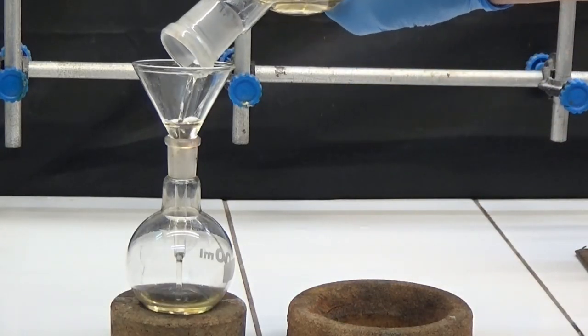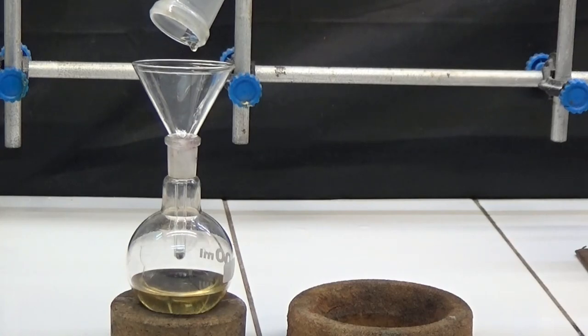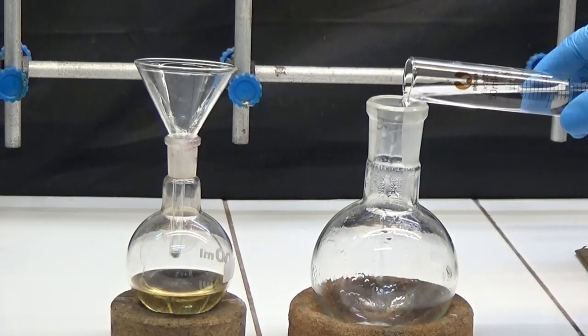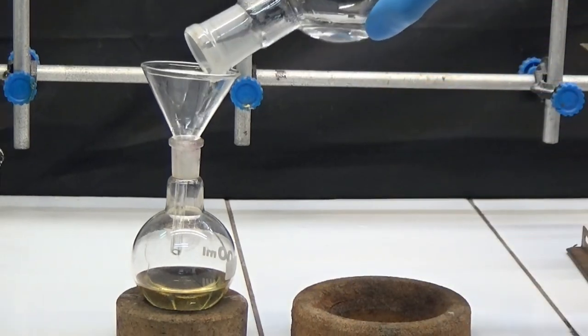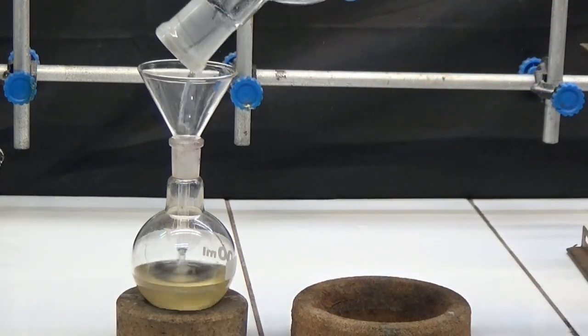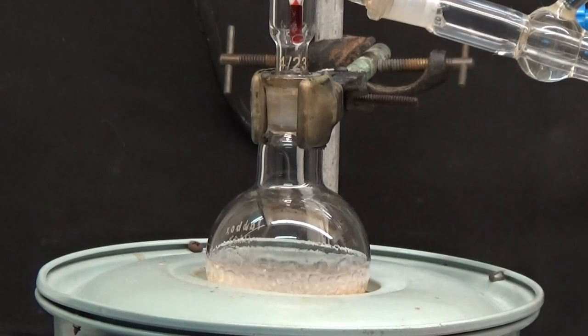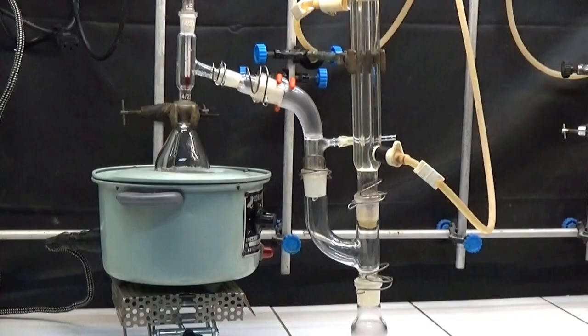Transfer to a 100 milliliters flask washing the 250 milliliters flask twice with 25 milliliters ethanol. Distill ethanol and continue with vacuum distillation.